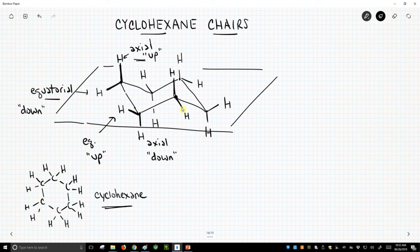This structure, if we were to draw Newman projections, we'd find everything is staggered. There's no eclipsing interactions. Everything has bond angles of approximately 109 degrees.